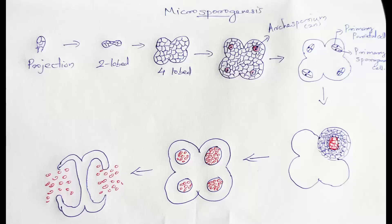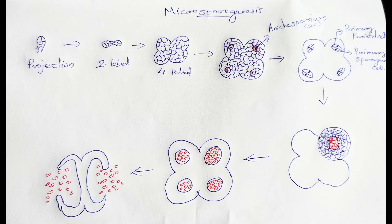The primary sporogenous cell undergoes repeated division to form a mass of cells called sporogenous tissue. Each cell divides meiotically to produce four haploid pollen grains. At first, the four pollen grains group together, called a pollen tetrad. After that, the pollen grains are separated out. You can see four chambers inside an anther; each chamber is called a microsporangium. Two microsporangia get united to form two large chambers. So a mature anther consists of two large chambers, but a young anther consists of four small chambers. The four chambers are called microsporangia, and the two large chambers are called pollen sacs. On either side, certain thin-walled parenchyma muscles are produced, called the annulus, and the annular region breaks so the pollen grains are liberated.